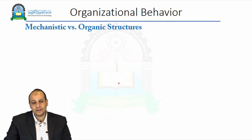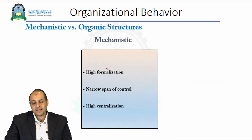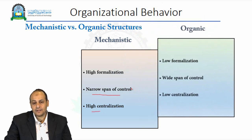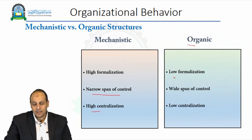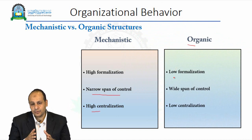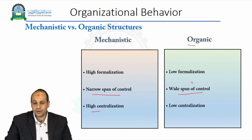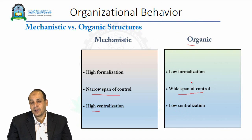Mechanistic versus organic structure: mechanistic companies adapt high formalization with usually formal communication, narrow span of control, and high centralization. Organic companies, on the other hand, provide enough space for employees to take decisions, informal communication is quite accepted, wide span of control, and low centralization. Organic structures are found more in companies where the business environment is complex, with diversity and more varied needs.